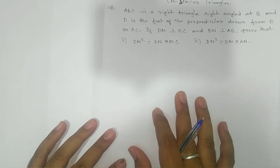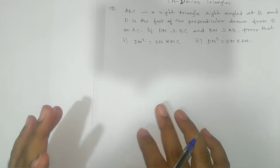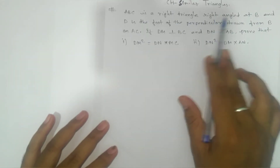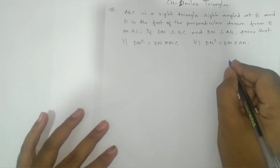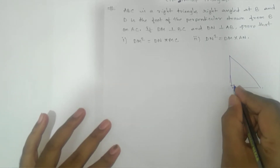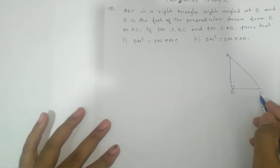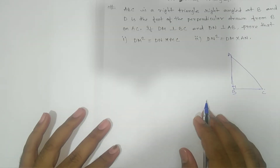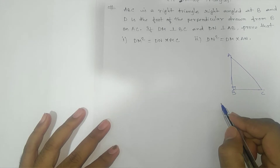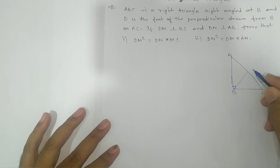Whenever you get this type of problem, your first target is to draw the diagram — once you draw the diagram, the maximum part is covered. So here ABC is a right angle triangle with right angle at B. We draw triangle ABC where angle B is 90 degrees. You can take A here and C here — that doesn't matter, but angle B must be 90 degrees.